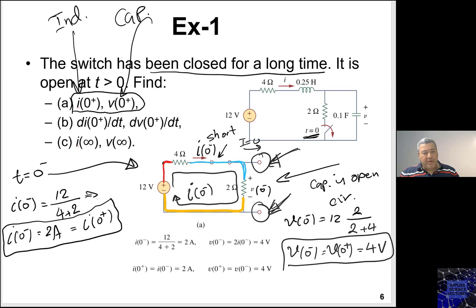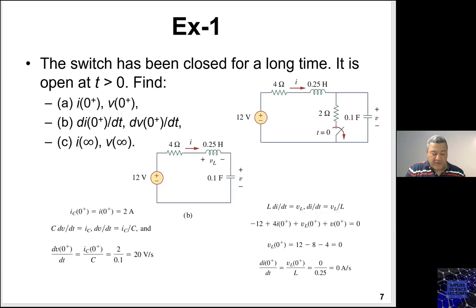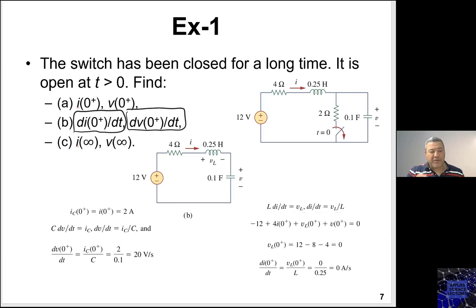Finding the initial values is not new — we have seen this in first-order circuits. What is new in second-order circuits is finding the derivative of the current and the voltage at t=0+.